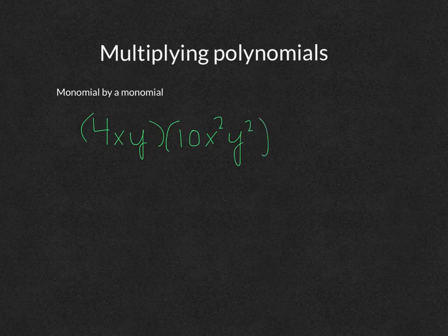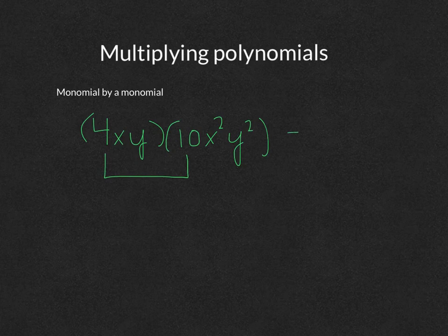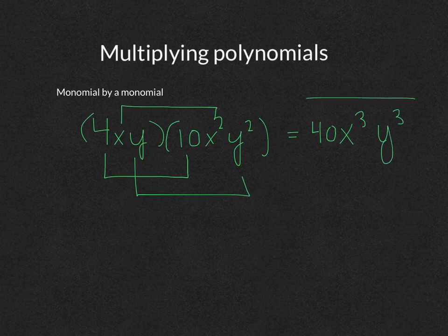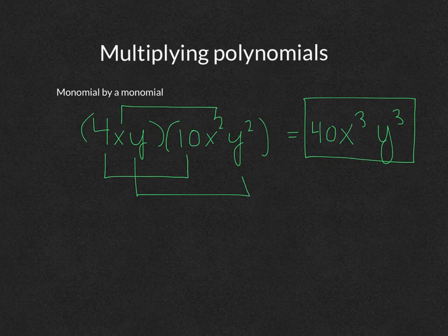When you're multiplying monomials, you use the exact same rules for exponents. You multiply the constants: 4 times 10 is 40. Then you multiply the x's: x times x squared is x cubed. Then the y's: y times y squared is y cubed. So the answer is 40x cubed y cubed. Multiplying a monomial by a monomial means you just multiply each like variable and each constant.